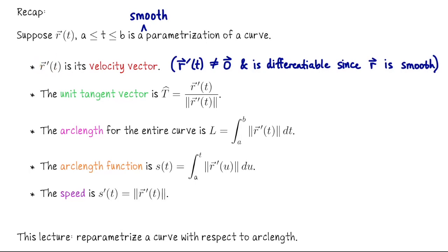So r prime of t is our velocity vector. r double prime is our acceleration vector. Given our parametrization r of t, the unit tangent vector that we can compute along the curve, we denote by t hat, and it's the velocity vector divided by the speed. So we take the velocity vector and we make it unit length to create this unit tangent vector.